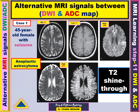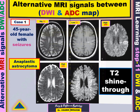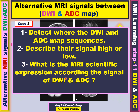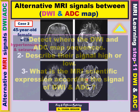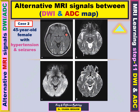The T1-weighted image shows white matter brighter than gray matter. This case was diagnosed as an aplastic astrocytoma. The lesson today is how to describe T2 shine through and how to detect it from the diffusion-weighted image and ADC map. Next case — detect the sequence and signal within the sequence and describe its MRI scientific expression. The next case is a 45-year-old female with hypertension and seizure.